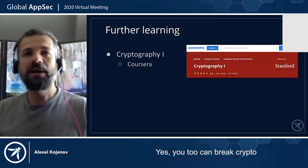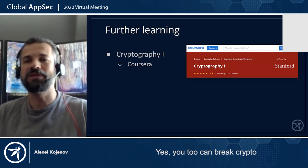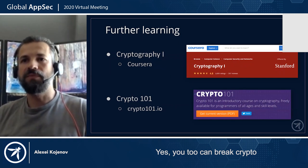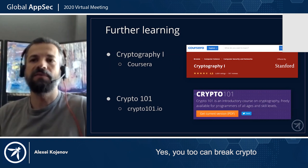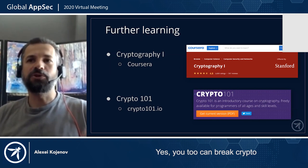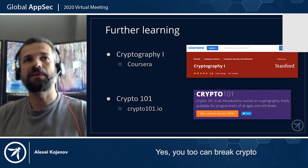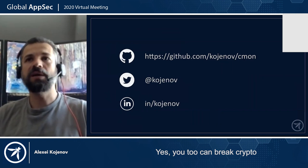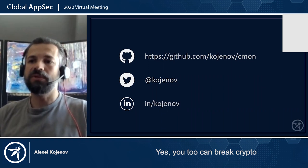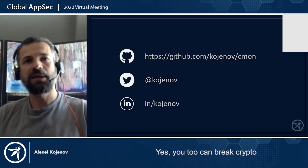For further learning, I would highly recommend this free course on Coursera — I'm not affiliated, I just took it a few years ago and it was awesome. There's also a free open-source book available as a PDF you can download and read — it covers lots of things from really basic to some deep material. Highly recommend. As I promised, my code is on GitHub — go to the URL, download it, play with it, and let me know what you think. I would be happy to talk to you, and good luck in your crypto adventures.